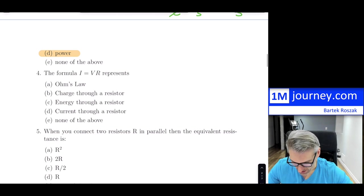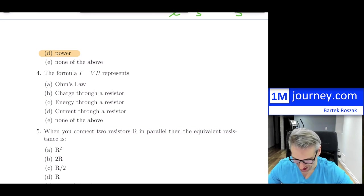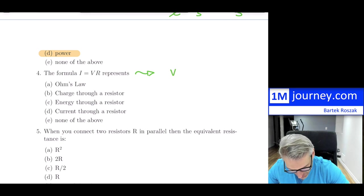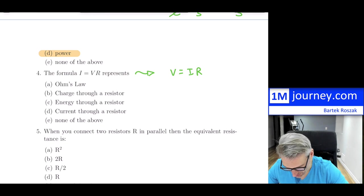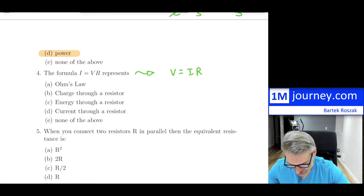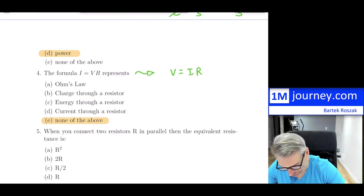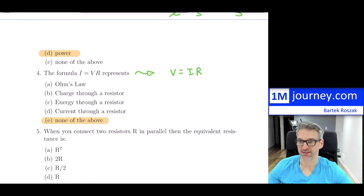Question four: the formula I = VR represents — don't get tricked. The correct form of Ohm's Law is V = IR, not I = VR. So I = VR is not Ohm's Law, and it has nothing to do with charge through a resistor. The answer is none of the above.